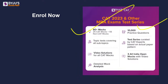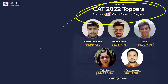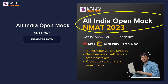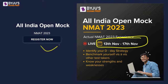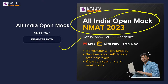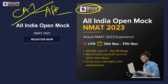For those planning for CAT 2023 and 2024, we are providing 80-plus marks, 10,000-plus practice questions, and more. These are our last year toppers — if they can do it, you can too. There is also an All India Open Mock for CAT 2023 running from 13th to 17th November. Download the Byju's Exam Prep app, go to the CAT section, and attempt the mock — it will be very beneficial.